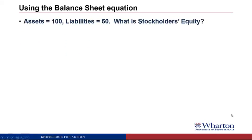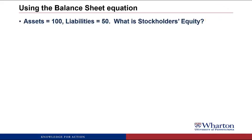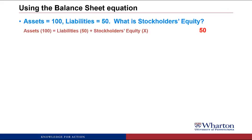Problem 1: Assets equals 100, liabilities equals 50. What is stockholders' equity? We can solve this with the balance sheet equation. We know assets are 100 and liabilities are 50. The only missing piece is stockholders' equity, which has to equal 50 so that we have 100 on the left-hand side and 100 on the right-hand side.